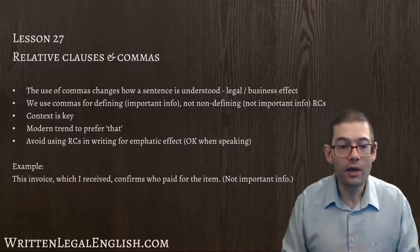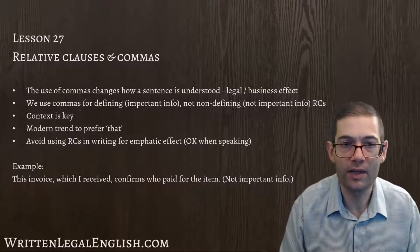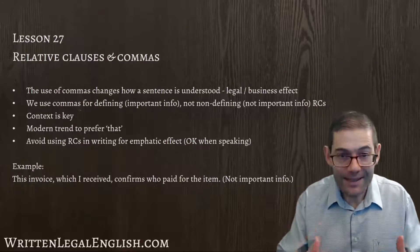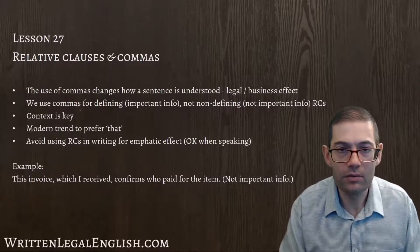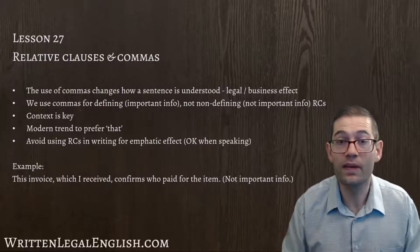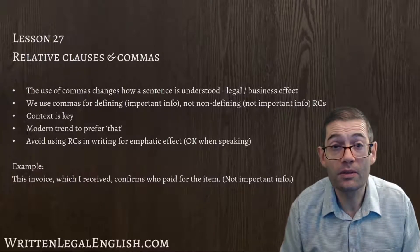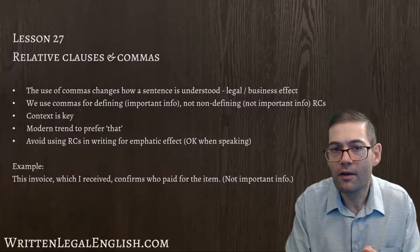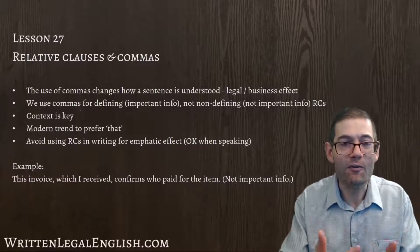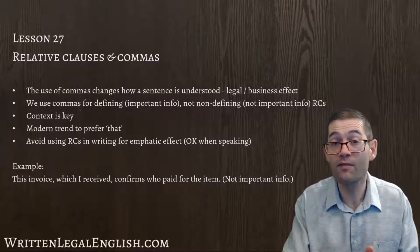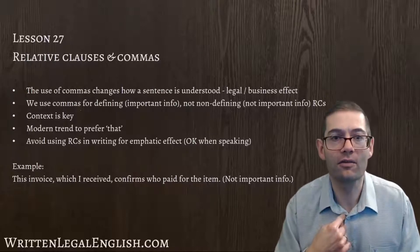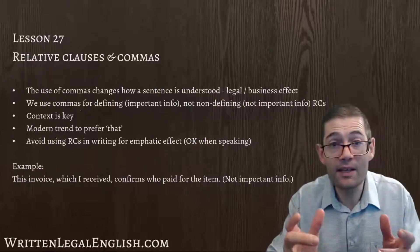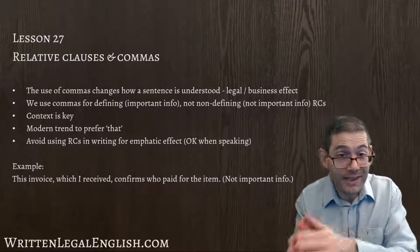Let's look at an example. 'This invoice, which I received, confirms who paid for the item.' Here we have a non-defining relative clause — 'which I received' is between commas, making that part of the sentence non-essential. So effectively we read it as: 'This invoice confirms who paid for the item.' The bit 'which I received' is not considered important. But what if it was important — what if it mattered that it was the one you received and no one else received? Because of your comma use, you've made that non-essential. You might intend to stress that it's you who received it, but putting it in commas makes it seem unimportant — saying something one way but writing it with commas creates the opposite message.